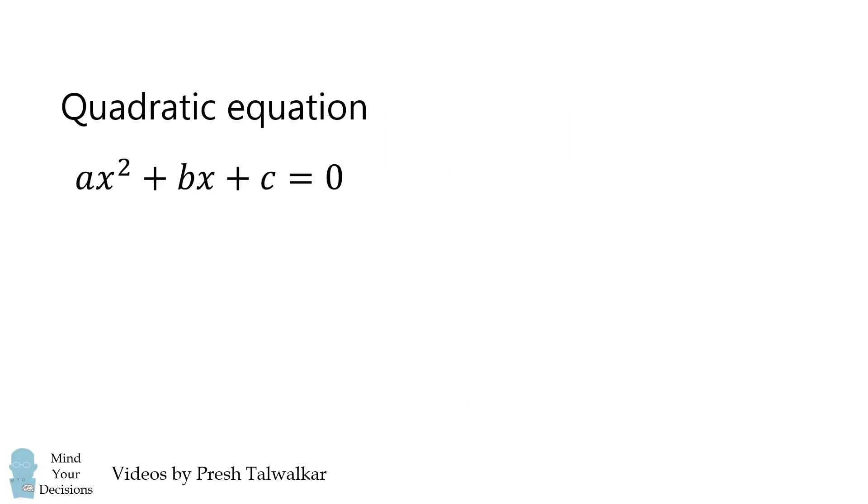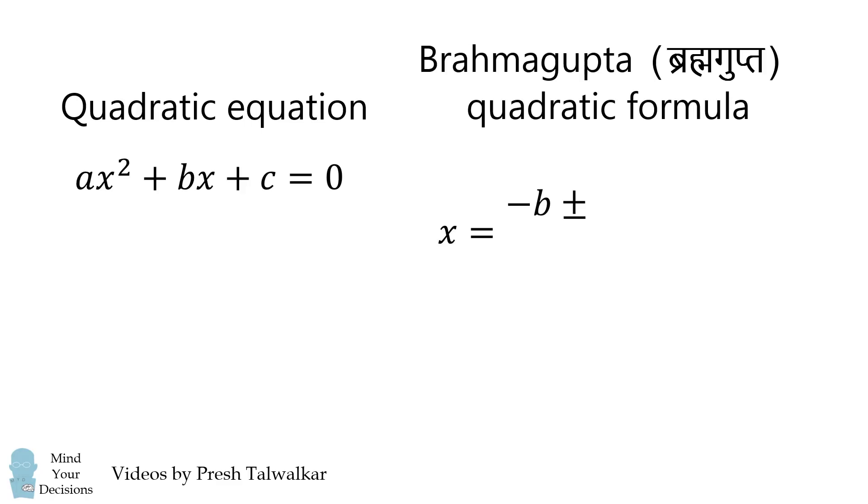We can solve a quadratic equation using Brahmagupta's quadratic formula. x equals the opposite of b plus or minus the square root of b² - 4ac all over 2a. Since we don't want to divide by 0, a cannot be equal to 0.